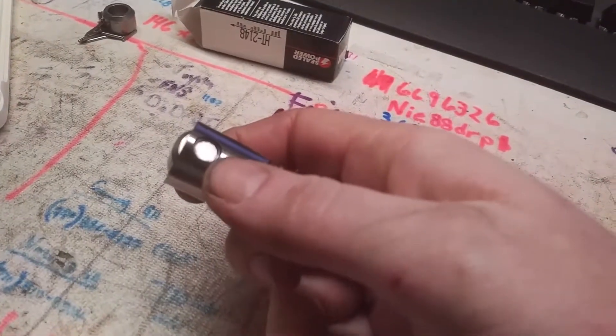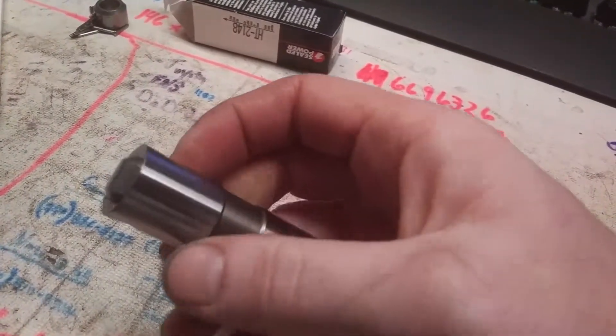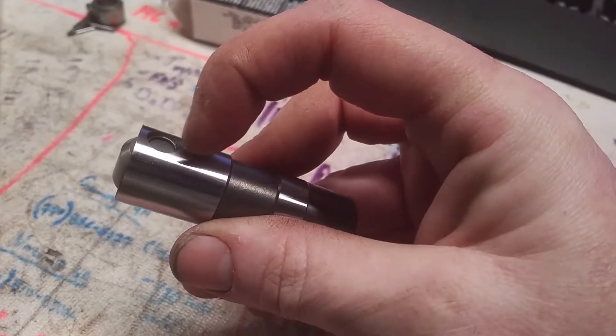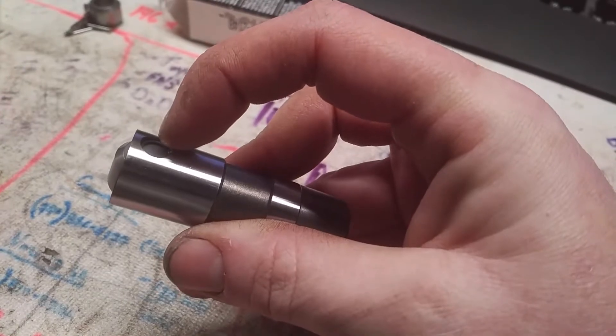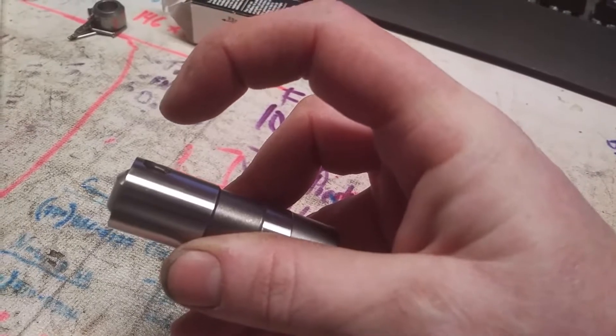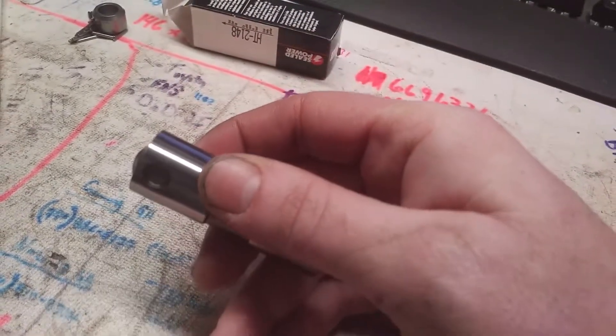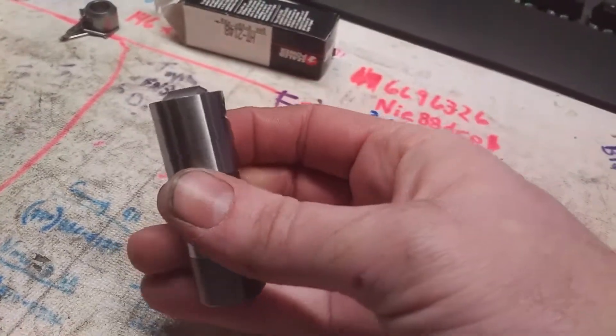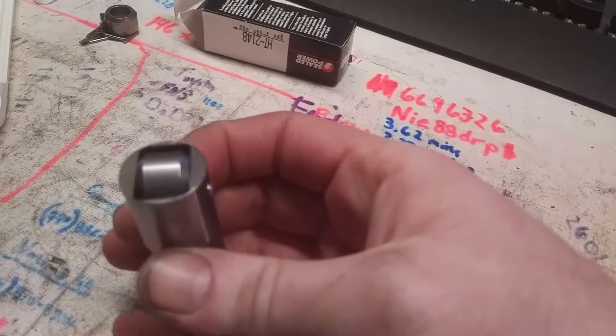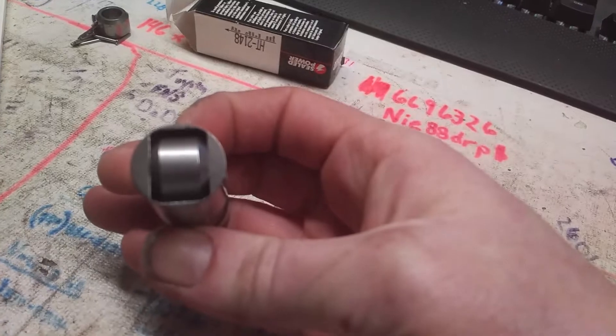If either one of these snap rings holding that rod in fails and that trunnion starts to push out that way or this way, it is now outside the circumference of the lifter.